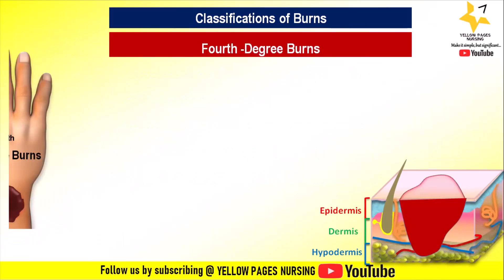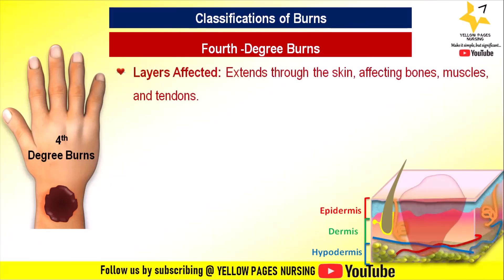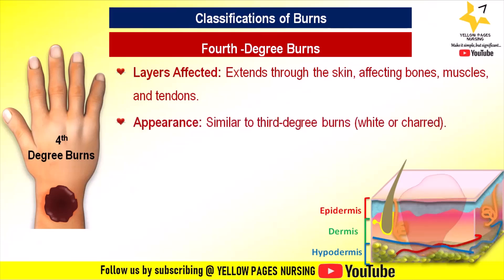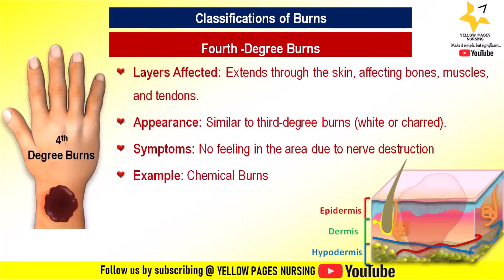Last comes fourth degree burns. They extend through the skin, affecting bones, muscles, and tendons. Their appearance is similar to third degree burns — appearing white or charred. There is no feeling in the area due to nerve destruction. Examples include chemical burns from exposure to highly corrosive chemicals such as industrial acids or alkalis, causing extensive tissue destruction that penetrates beyond the skin into muscles and bones.